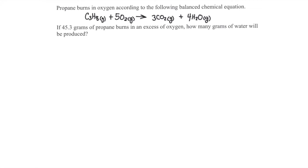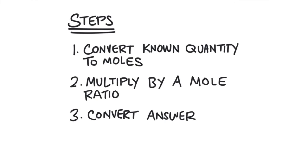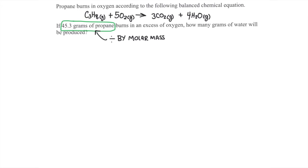Propane burns in oxygen to produce carbon dioxide and water vapor according to the following balanced chemical equation. If 45.3 grams of propane burns in an excess amount of oxygen, how many grams of water will be produced? The recipe says that for every 1 mole of propane, 4 moles of water will be produced. But we don't know how many moles of propane we're starting with — we know the grams. To convert from grams to moles, we divide the amount in grams by the molar mass. The steps are: first convert the known quantity to moles, multiply by the mole ratio comparing the unknown to the known based on the balanced equation, and then convert your answer to the desired unit.